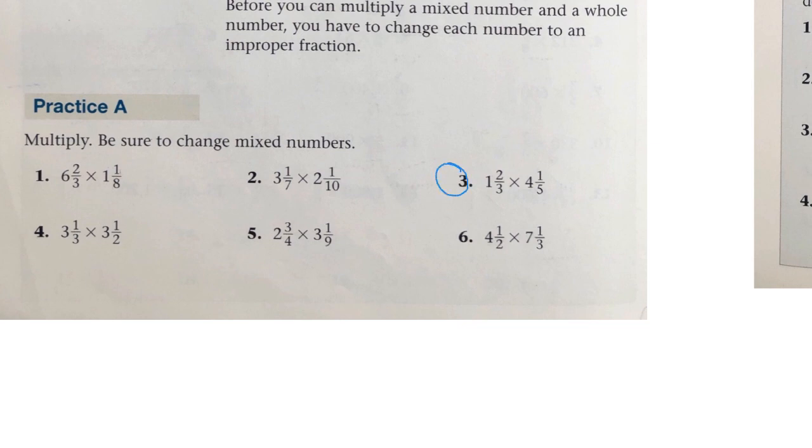We'll start with number 3 for a little bit of space. 1 and 2/3 would be 3 times 1 plus 2. And then the answer will be over the same denominator, 3. Now 3 times 1 plus 2 is 5.